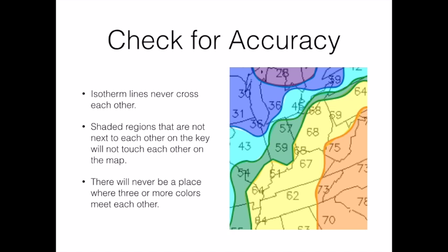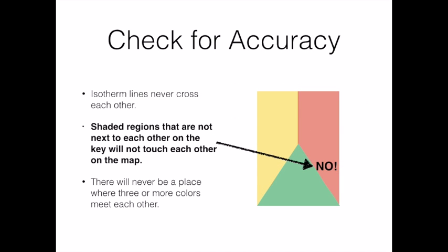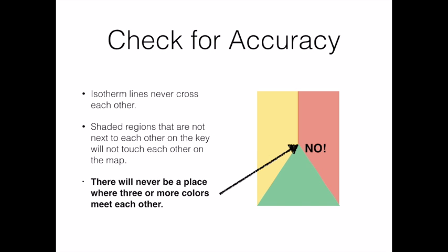Once I've finished my map it's time to check it to make sure I've done it accurately. If I've done it correctly, isotherm lines never cross each other. Shaded regions that are not next to each other on the key cannot touch each other on the map. Finally, there will never be a place where three or more colors meet each other.